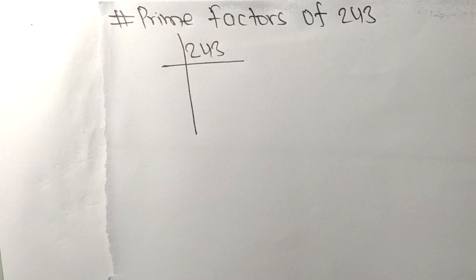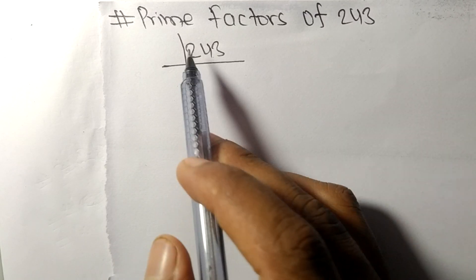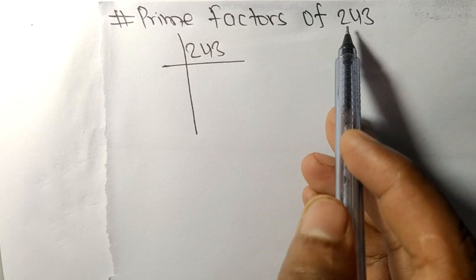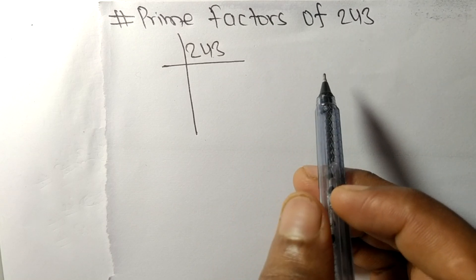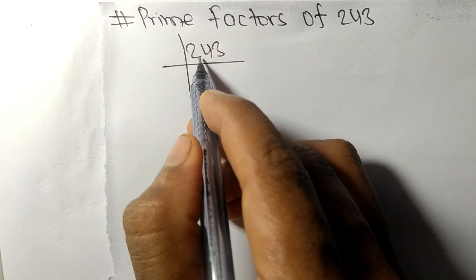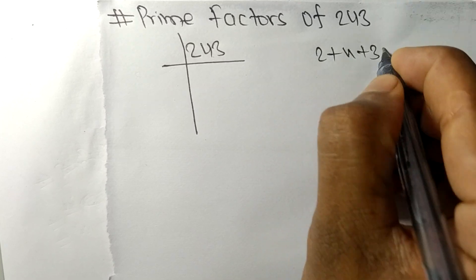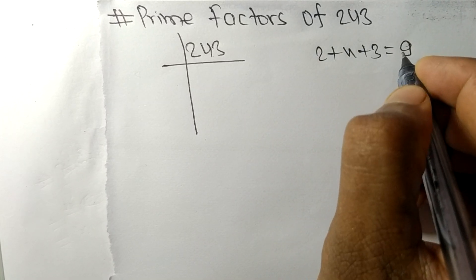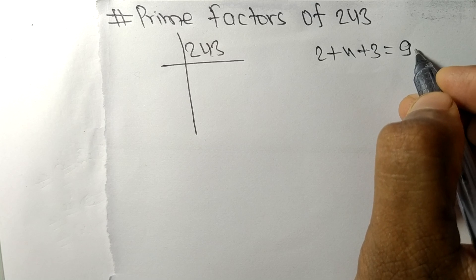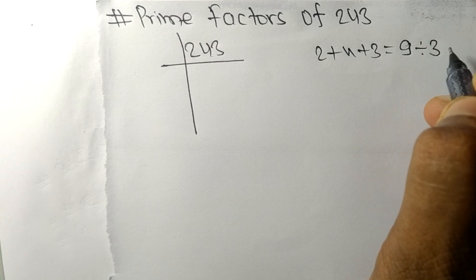So today in this video we shall learn to find the prime factors of 243. When we add 2 plus 4 plus 3, we get 9, and 9 is exactly divisible by 3.